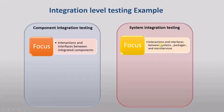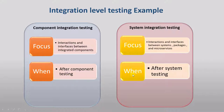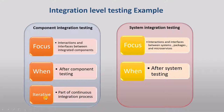If there are multiple systems, we check the interaction between those systems. Component integration testing is performed after component testing. Similarly, system integration testing is performed after system testing. Component integration testing is also iterative — it is part of the continuous integration process. When you develop code, you do component testing, then integration testing, and so on. It is an iterative process.